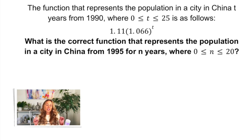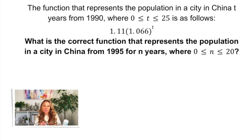Okay. This next one I had to think about for a minute. It was talking about the population of a city in China from 1990 where T was years. I mean, this is an exponential growth problem, right guys? Now these numbers might be a little off. I can't remember if the principle was 1.11 or something else. So I apologize if I got the principle wrong. But the growth rate was 6.6% as you can see in the exponential growth function. And then the question asks, what is the correct function that represents the population in a city in China from 1995?